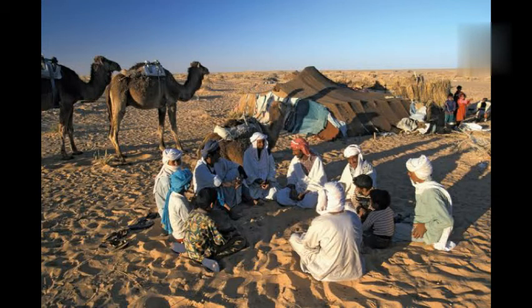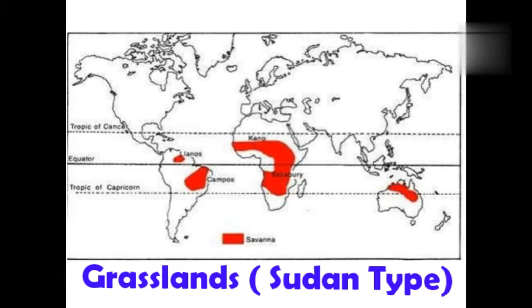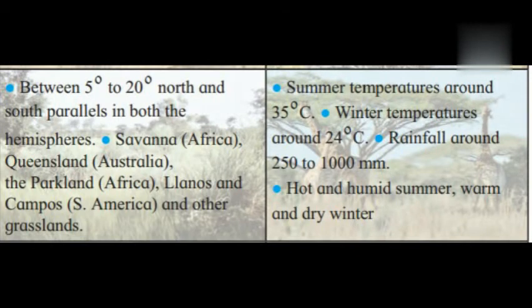Next is the Sudan-type Grasslands. The red color on this map shows the Sudan-type grassland. Its extent and location is between 5 degree to 20 degree north and south parallels in both hemispheres — Savannah in Africa, Queensland in Australia, parkland in Africa, Llanos and Campos in South America, and other grasslands.